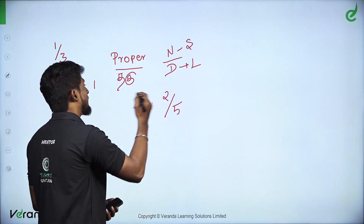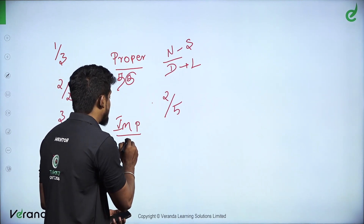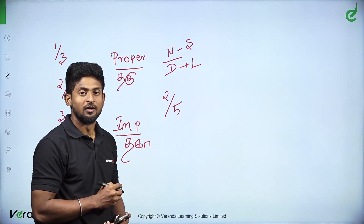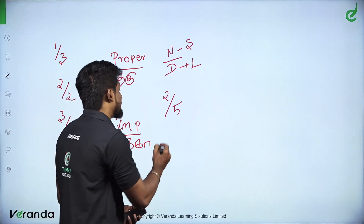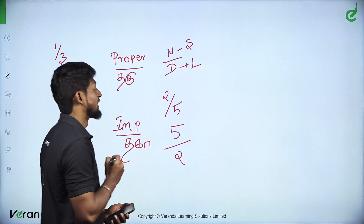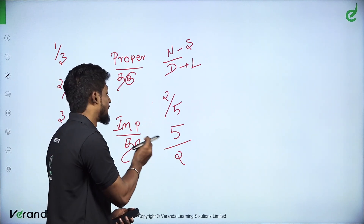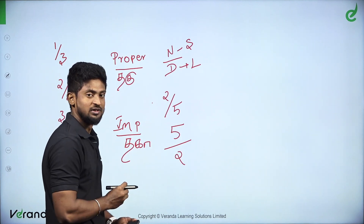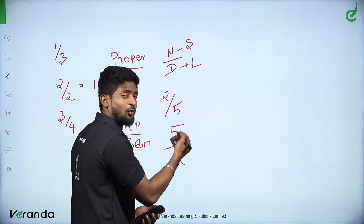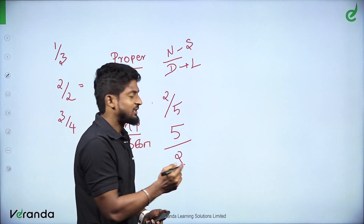That is the proper fraction. Here is the improper fraction. What is the improper fraction? In an improper fraction, the numerator is larger than the denominator. Example: five by two. Two by five is a proper fraction; improper fraction is five by two. Here we have an improper value. Now let's divide by improper fraction — there is a number on the left.